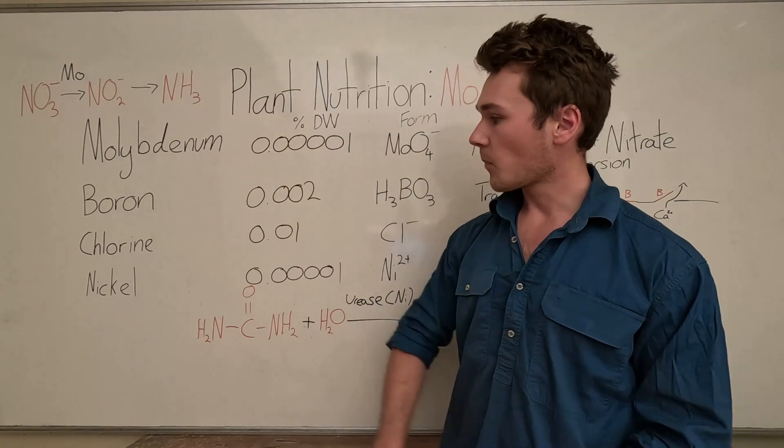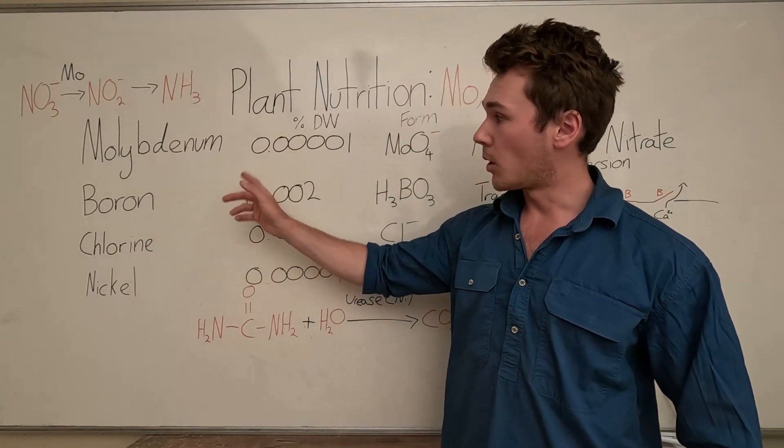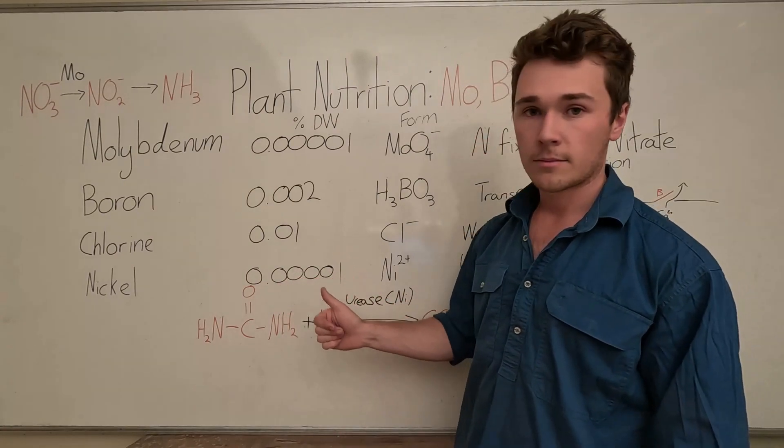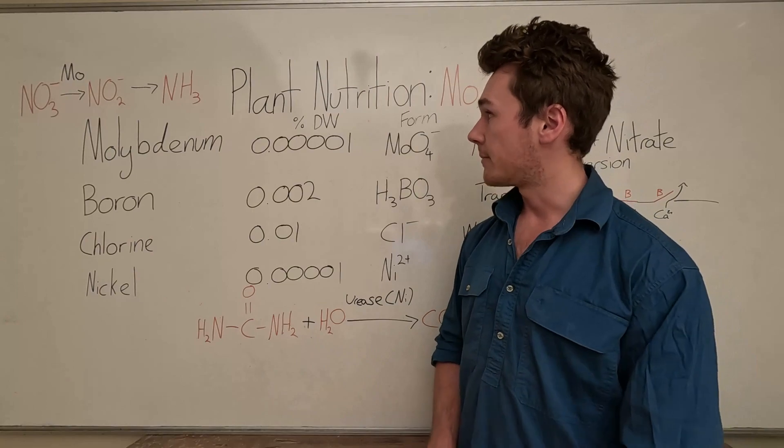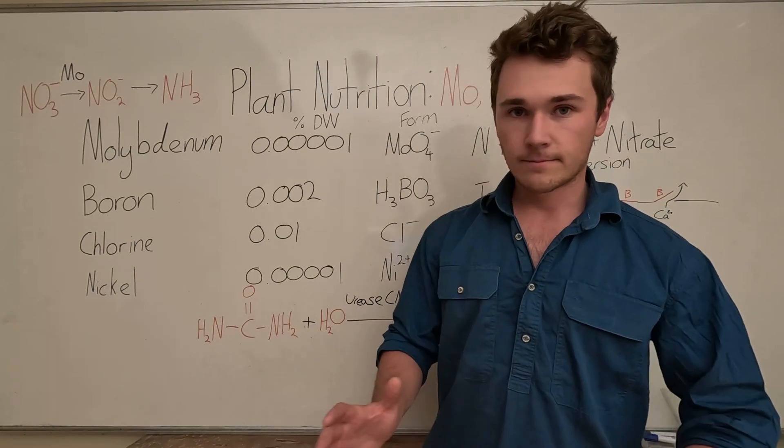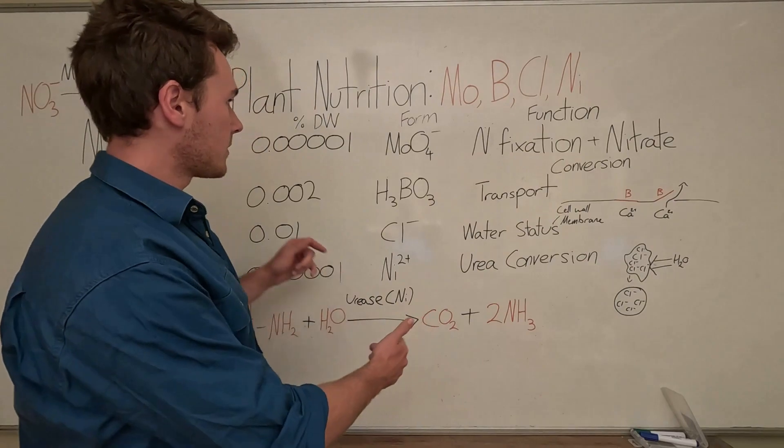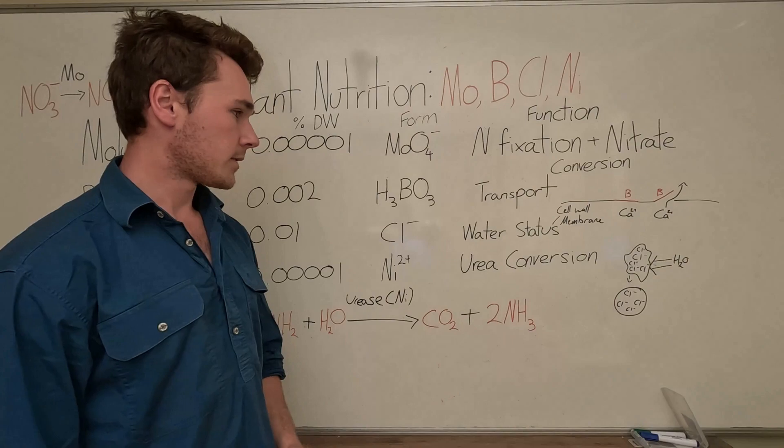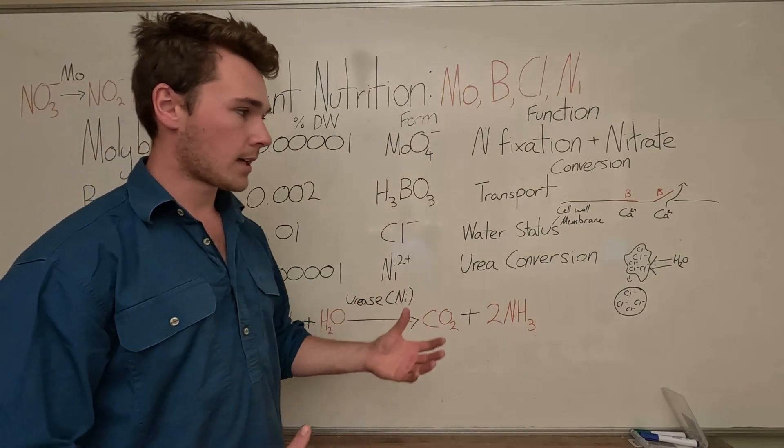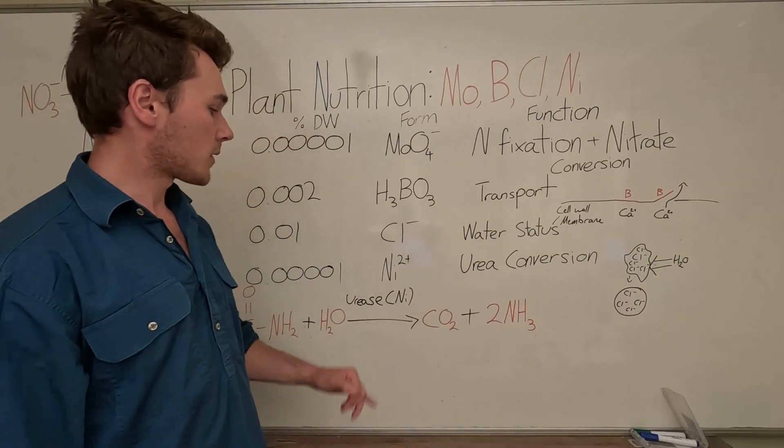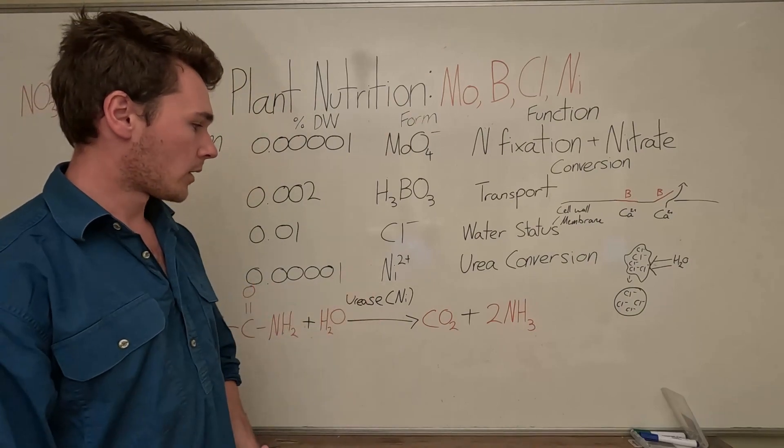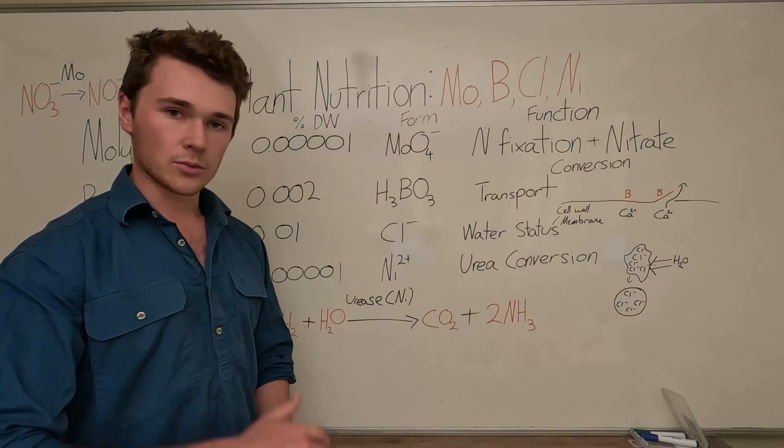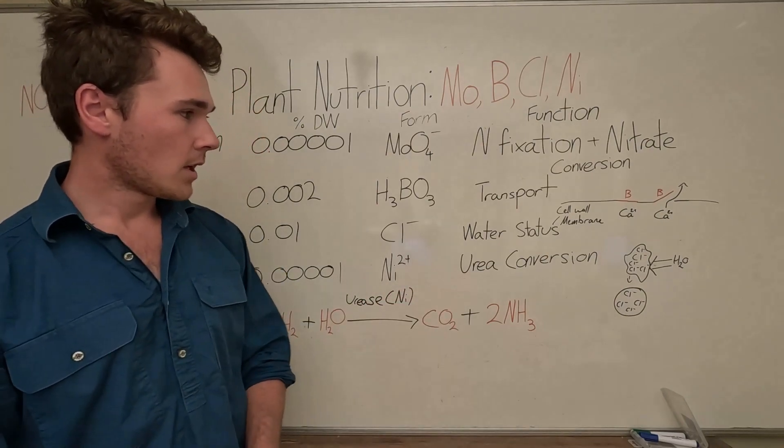Finally, we have nickel. Nickel, like moly, isn't used much at all: 0.00001 percent of our dry weight, not much at all. You can almost think of nickel as the opposite, or the urea version of moly. It's used in the conversion of urea to ammonium. Firstly, it's absorbed in the cation or the reduced state as nickel 2+, and then it's used in urea conversion.